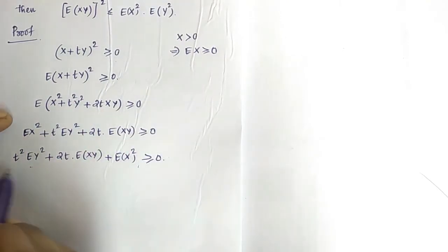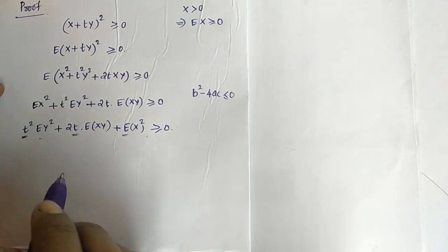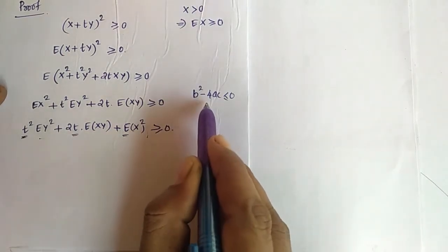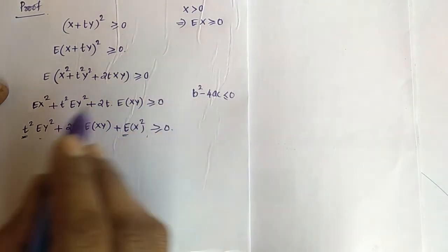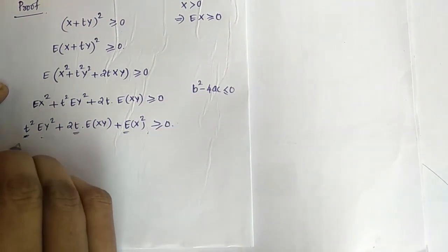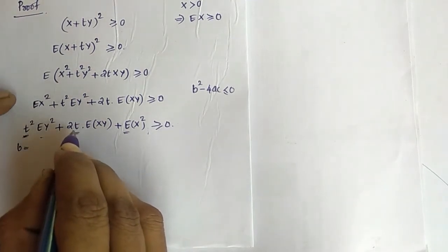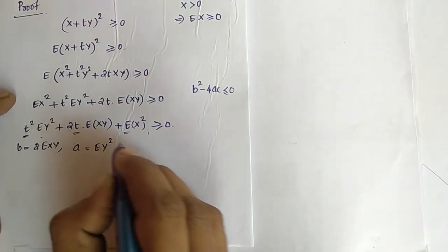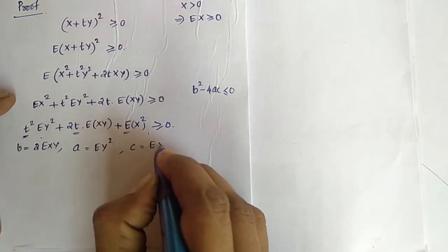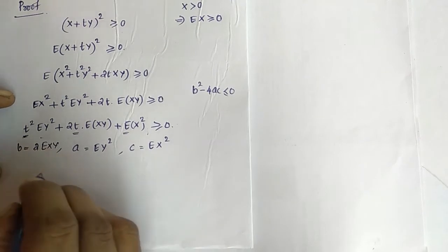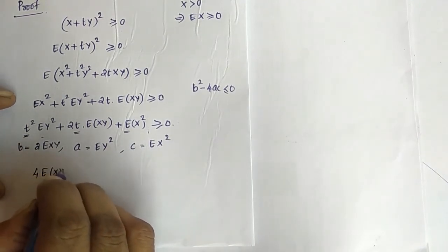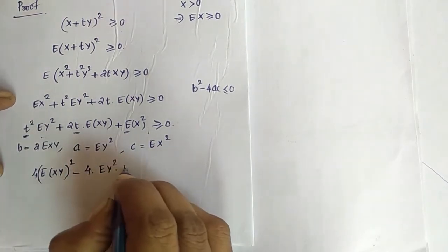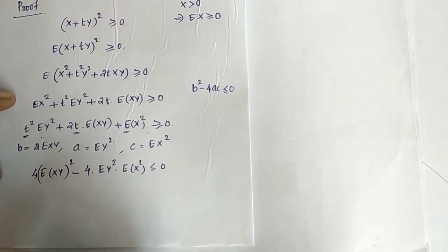Now this is a quadratic polynomial in t. If a quadratic polynomial is greater than or equal to 0, we can say that its discriminant, b square minus 4ac, is less than or equal to 0. Here b is equal to 2 into expectation of xy, a is equal to expectation of y square, and c is the constant term, which is expectation of x square. So b square minus 4ac will be 4 times expectation of xy that whole square, minus 4 into expectation of y square into expectation of x square, and this is less than or equal to 0.